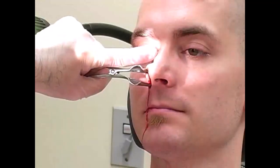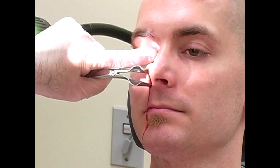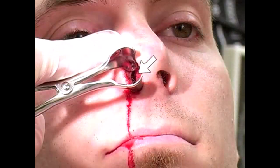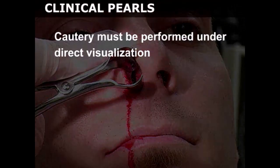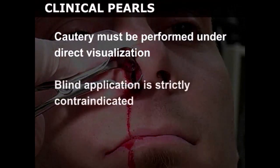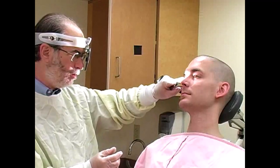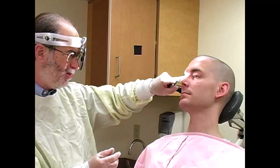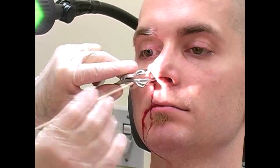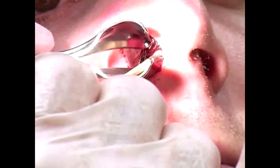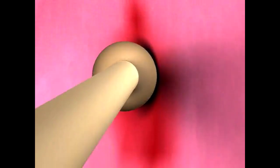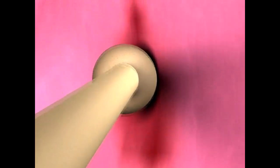If a source of anterior bleeding from Kiesselbach's plexus is identified, you may attempt to cauterize it directly using silver nitrate. This technique must be performed under direct visualization and blind application is strictly contraindicated. Hold the nasal speculum in your non-dominant hand and spread the nares vertically. Hold the silver nitrate stick in your dominant hand and carefully begin to cauterize by rolling the stick over the bleeding mucosa until an eschar forms, which usually takes about 5 seconds.